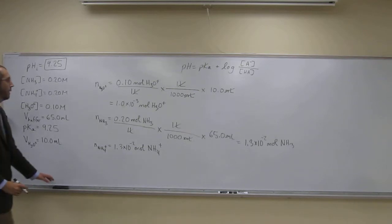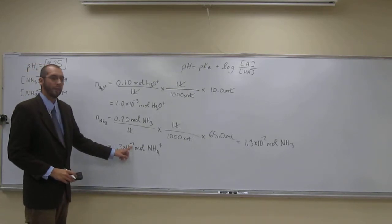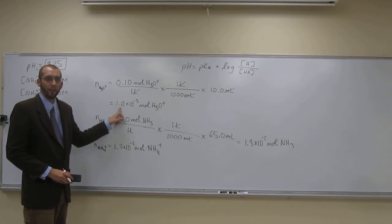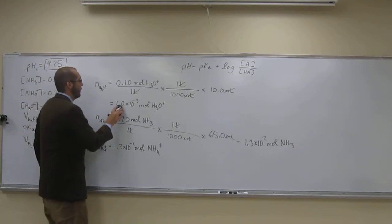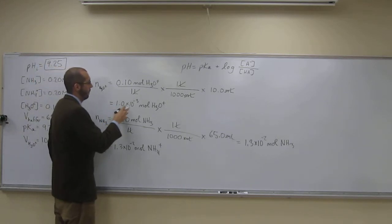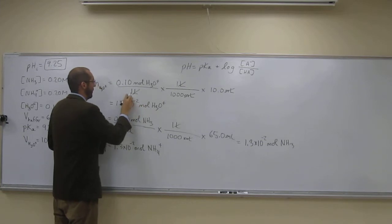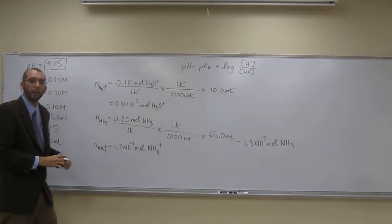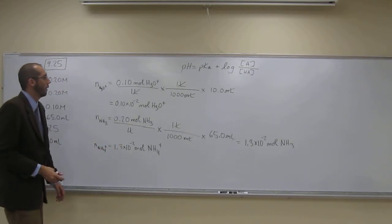Since everything is times 10 to the negative 2, we'll convert the H3O+ moles to that exponent as well, making it 0.10 times 10 to the negative 2, to make the ICE table easier to work with.